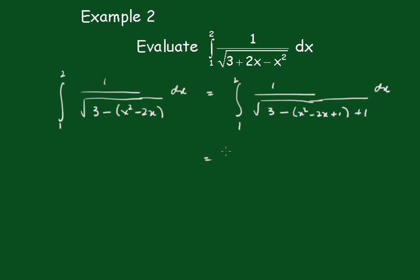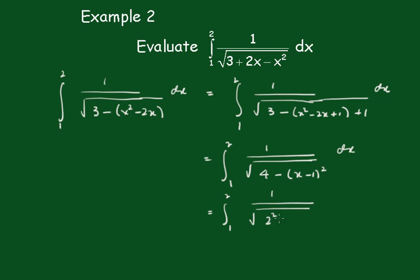So this now becomes 2, 1, 1 over the square root of 4 minus x minus 1 all squared dx. Now I could actually do a manipulation here, but we don't really need to do that. Because that now is becoming 1, 1 over the square root of 2 squared minus x minus 1 all squared dx.